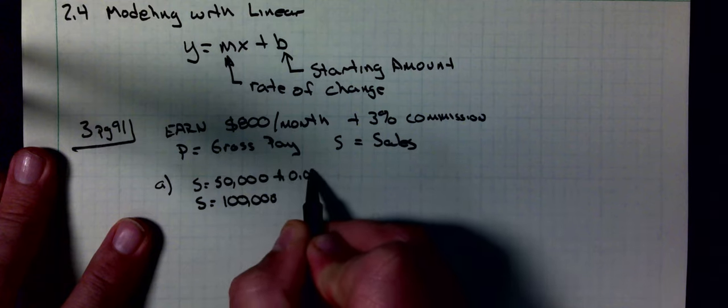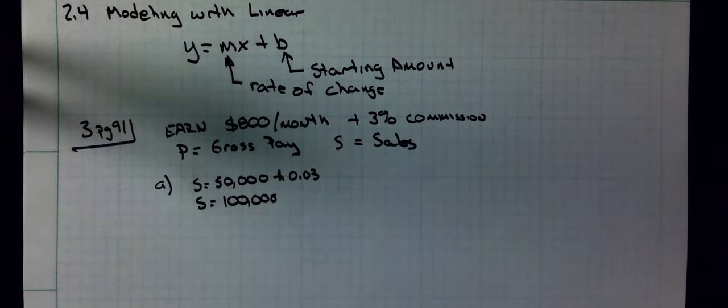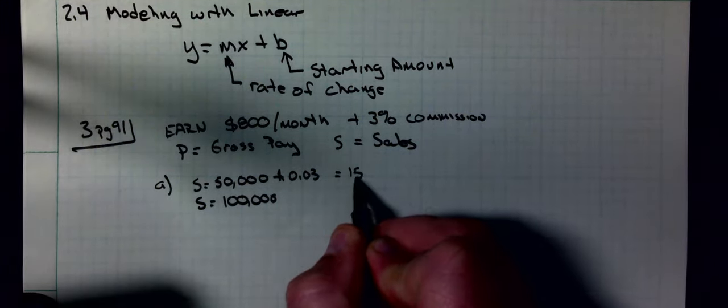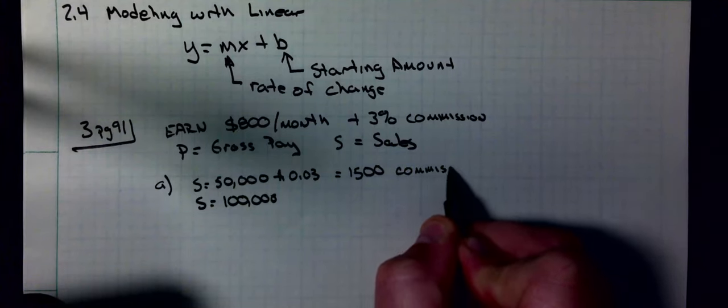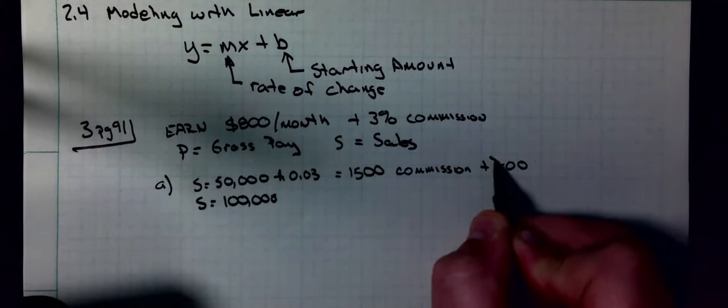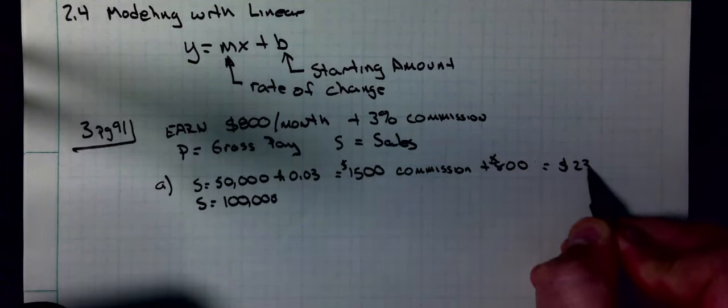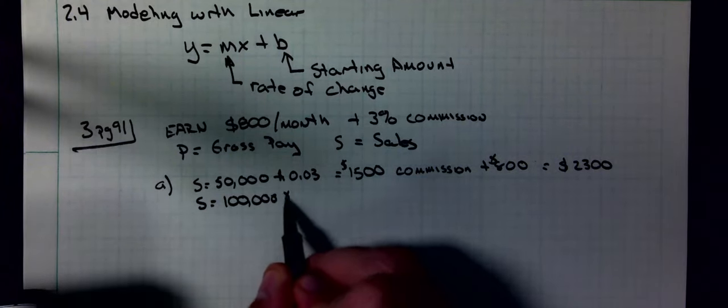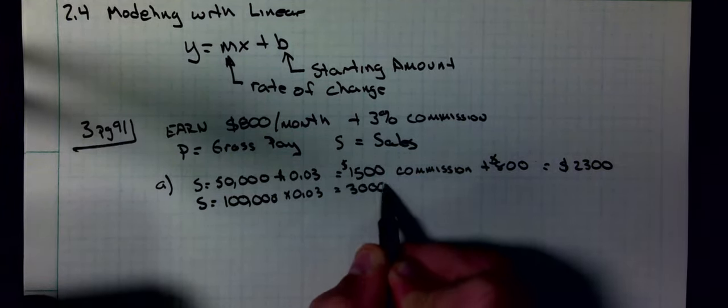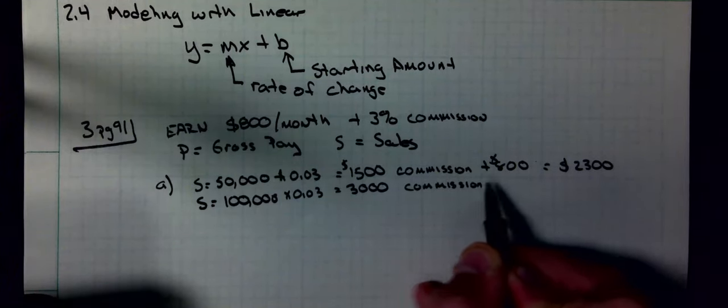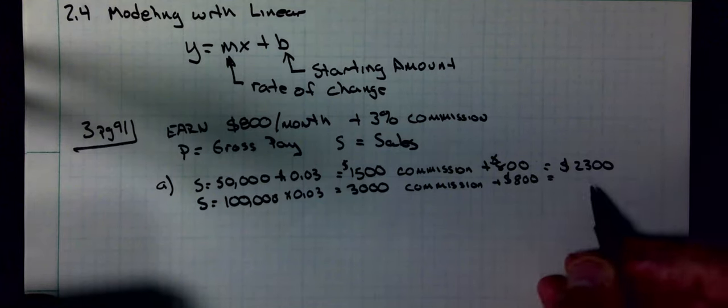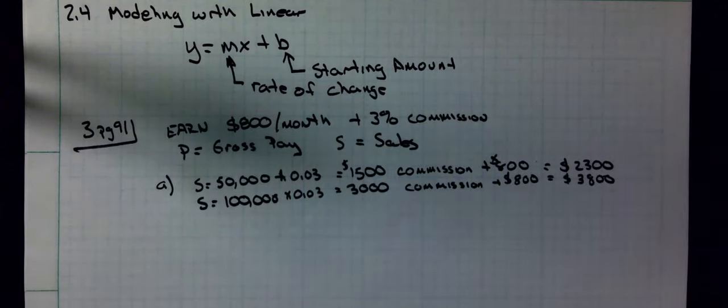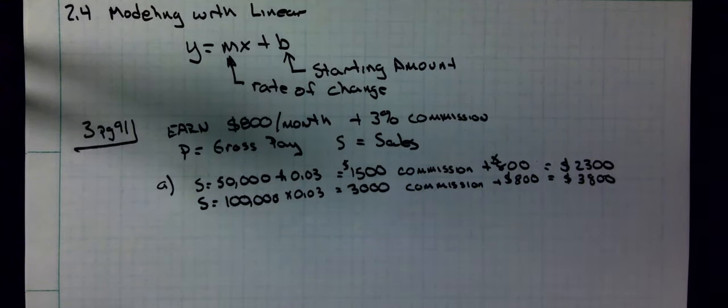Well, I'm going to take the $50,000 times 0.03, and we'll use a calculator. Don't forget percentages, you move the decimal point two places. So 50,000 times 0.03 is $1,500. That's his commission. Then I'm going to add the $800 to it, so $1,500 plus $800 is $2,300.